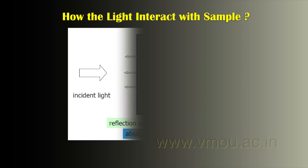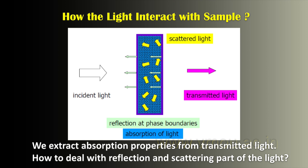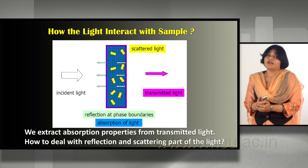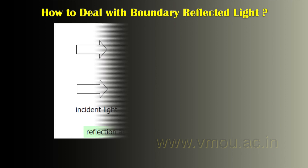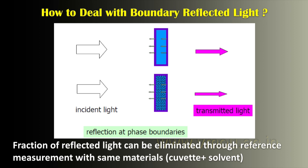How does light interact with a sample? When incident light hits the sample, it can be scattered, transmitted, absorbed, or reflected — four processes the light may undergo. We extract absorption properties from transmitted light. How do we deal with the reflected and scattering part? A portion is reflected through the cuvette, solvent, or material particles present in the solvent.